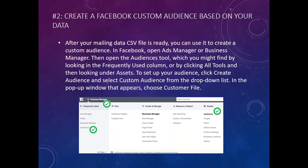The second thing we need to do is create a Facebook custom audience based on that data. After we import the CSV file, we can use it to create a custom audience. In Facebook, open ads manager or business manager, go to the menu button, then go to Assets and click on Audiences. You'll create an audience, select Custom Audience from the dropdown, then choose Customer File. I'll show you what that looks like in the demonstration after the presentation.